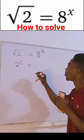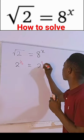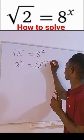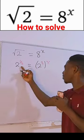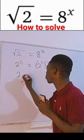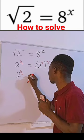So 8 to the power x could also be written as 2 to the third power, all to the power x. Of course, you keep the left-hand side as 2 to the power one-half.